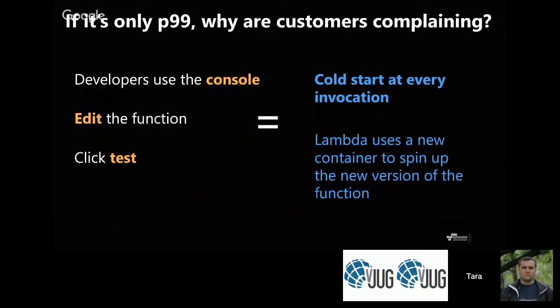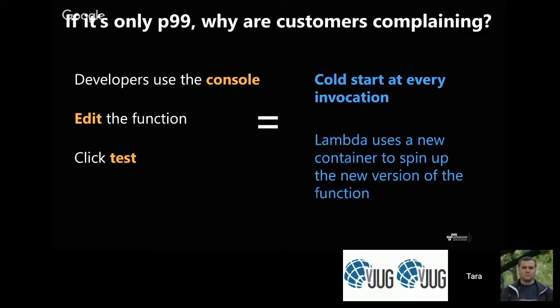Customers experience cold starts typically because they're using dynamic languages — luckily Java users don't have this issue as frequently. You also see it when you edit a function and it needs to spin up a new container, or when you're clicking test repeatedly in the CLI, IDE, or console and it needs to make sure it's spinning up the right version for appropriate testing.